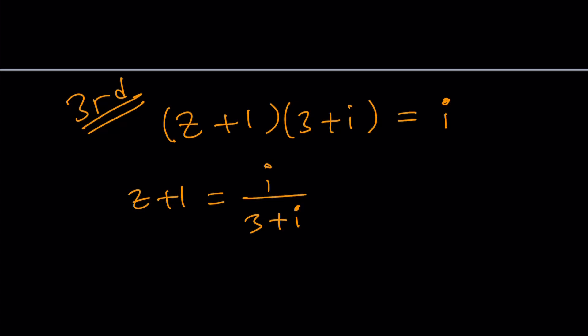If you have Z plus 1 equals something, what would you do normally? You would subtract 1 from both sides. Let's do it.